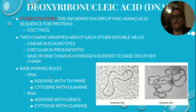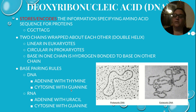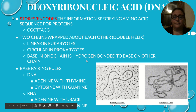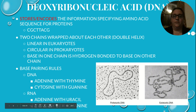The base pairing rules — just as a reminder: in DNA, A goes with T (adenine with thymine — 'apples on the tree'), and cytosine with guanine ('cars in the garage'). In RNA, adenine will go with uracil, and cytosine and guanine will still go together.